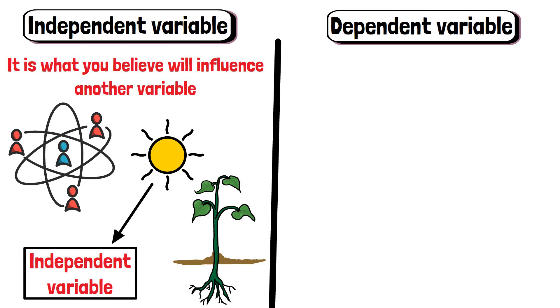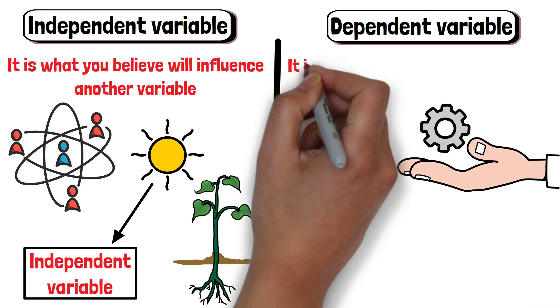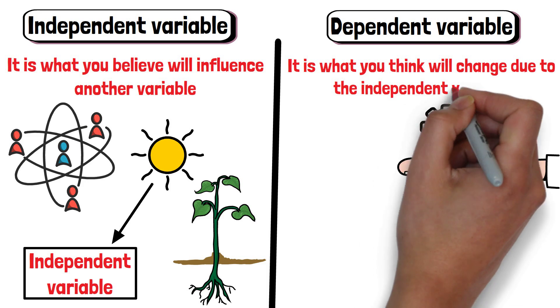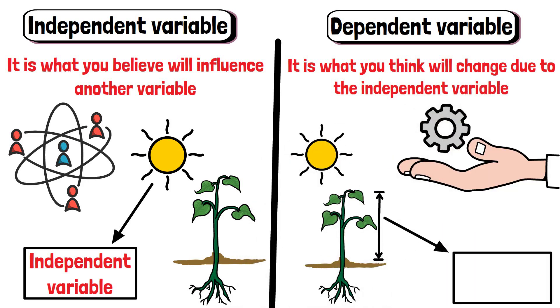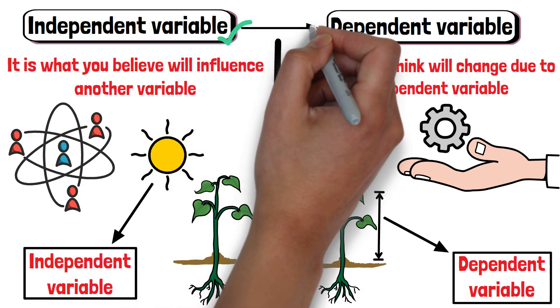A dependent variable is the factor that you measure or observe. It is what you think will change due to the independent variable. In the plant example, the growth of the plants is the dependent variable. You depend on the independent variable to see how it affects the dependent variable.